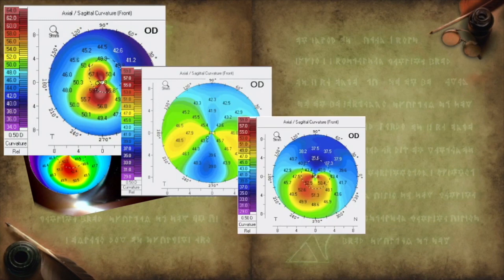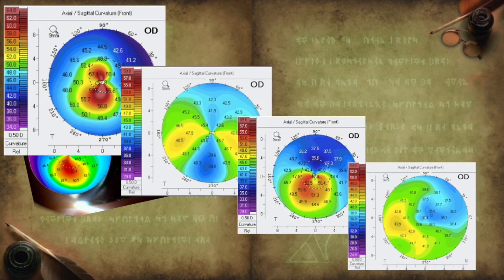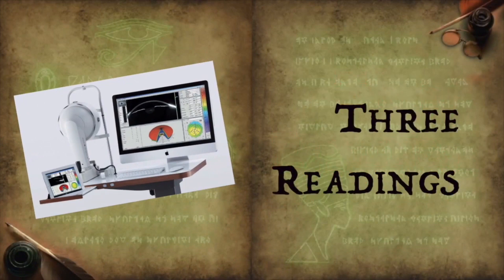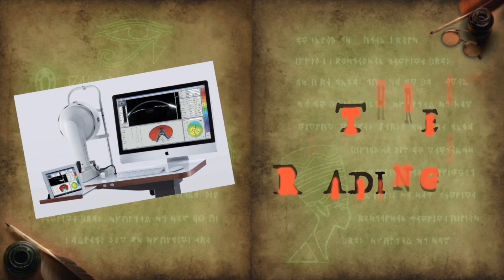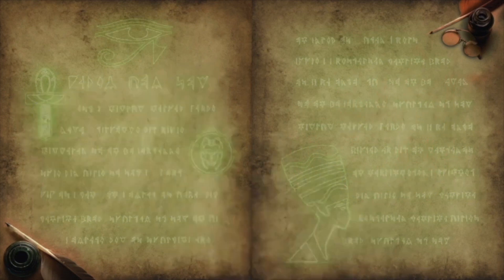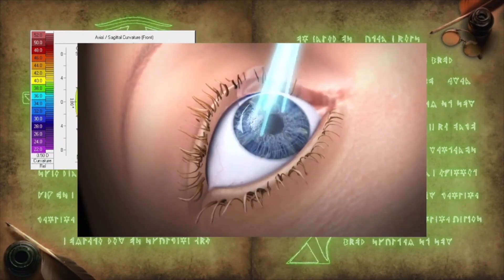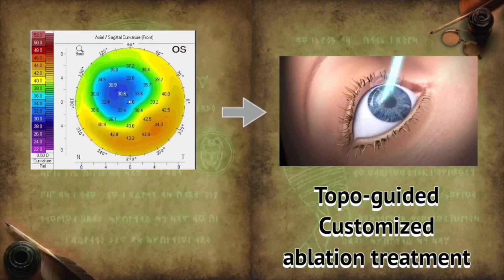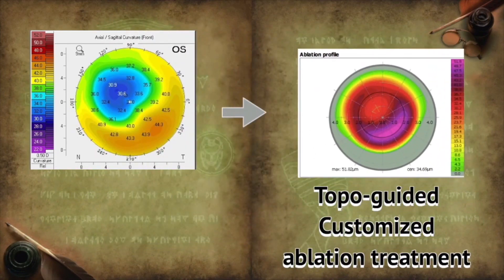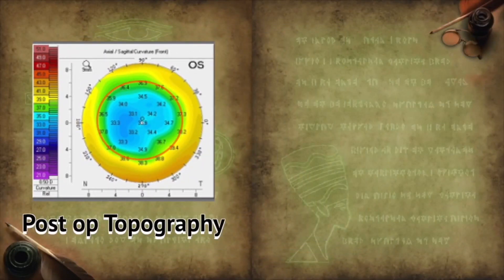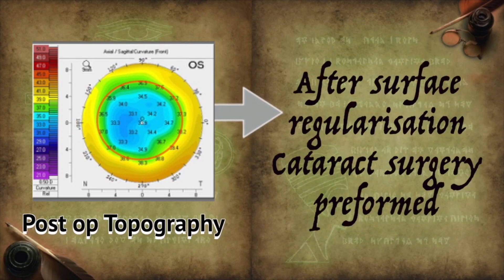One must identify keratoconus, pellucid marginal degeneration, post-LASIK ectasia, and decentered ablation, for which a good knowledge of topography is a must. At least three readings must be taken to ensure repeatability. For irregular corneas with stable topography, the corneal surface can be regularized by topo-guided customized ablation treatment. After surface ablation, cataract surgery with intraocular implantation can then be performed.